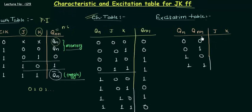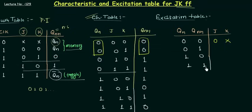For the first case when Qn=0 and Qn+1=0, looking at the characteristic table the first two cases have Qn and Qn+1 as 0. J is always 0, so I write J as 0. But K is 0 or 1, so K is don't care because the output only depends on J — whatever the value of K, it's not going to change. For the case when Qn=0 and Qn+1=1, J is 1 whereas K is 0 or 1, so J is 1 and K is again don't care.